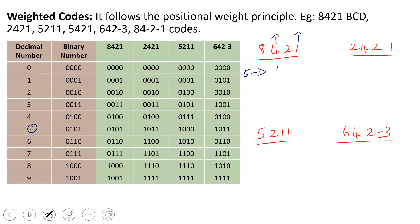For the position of 4, then 1, and position 0. In the 2421 code, the bit positions are 2, 4, 2, 1. We can represent 5 using this code. To get 5, we need 2 plus 2 plus 1, so those positions are 1. The result is 1011 in 2421 code.